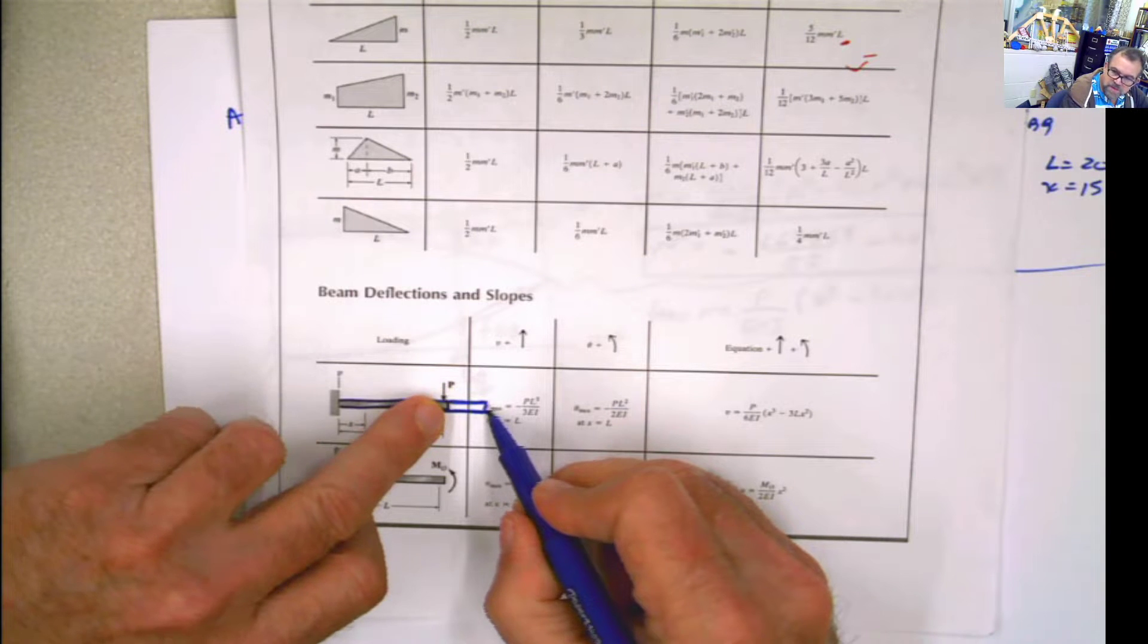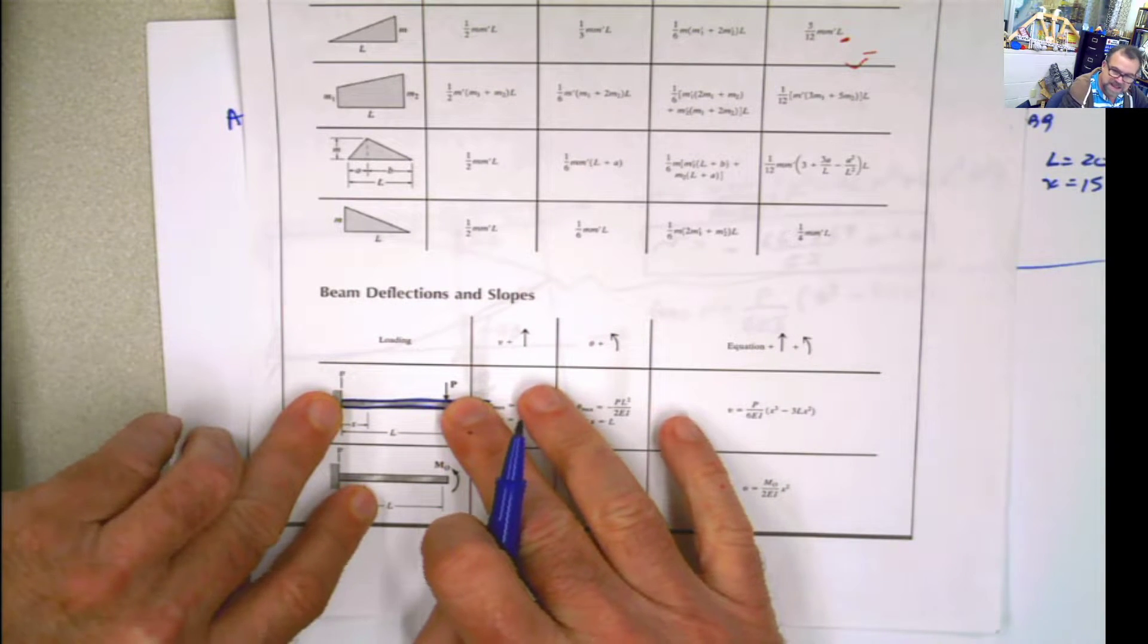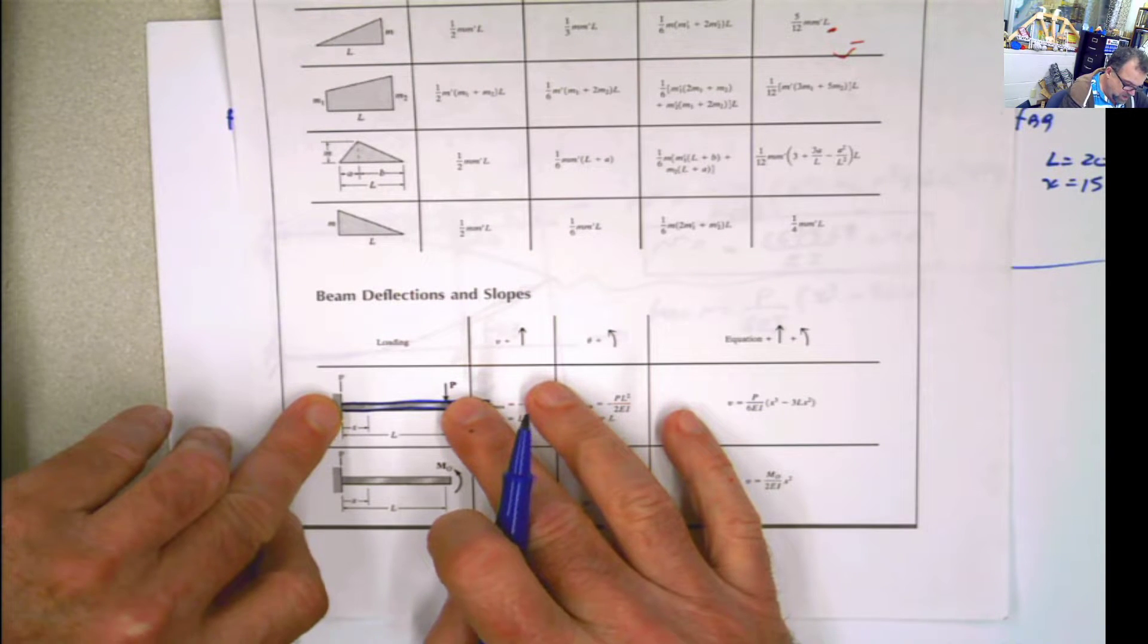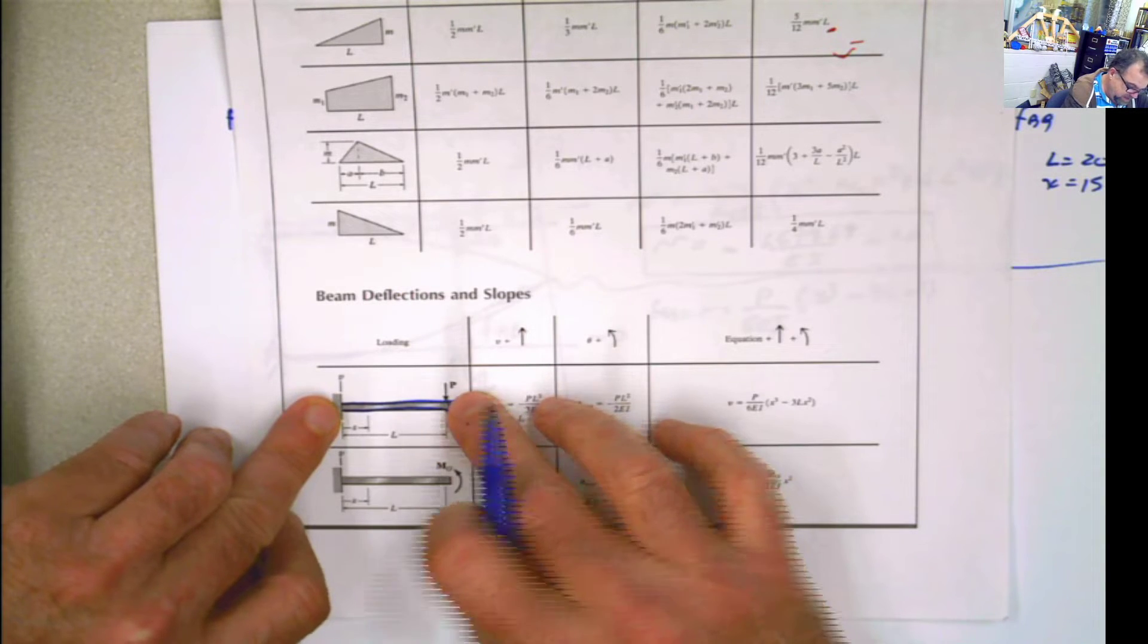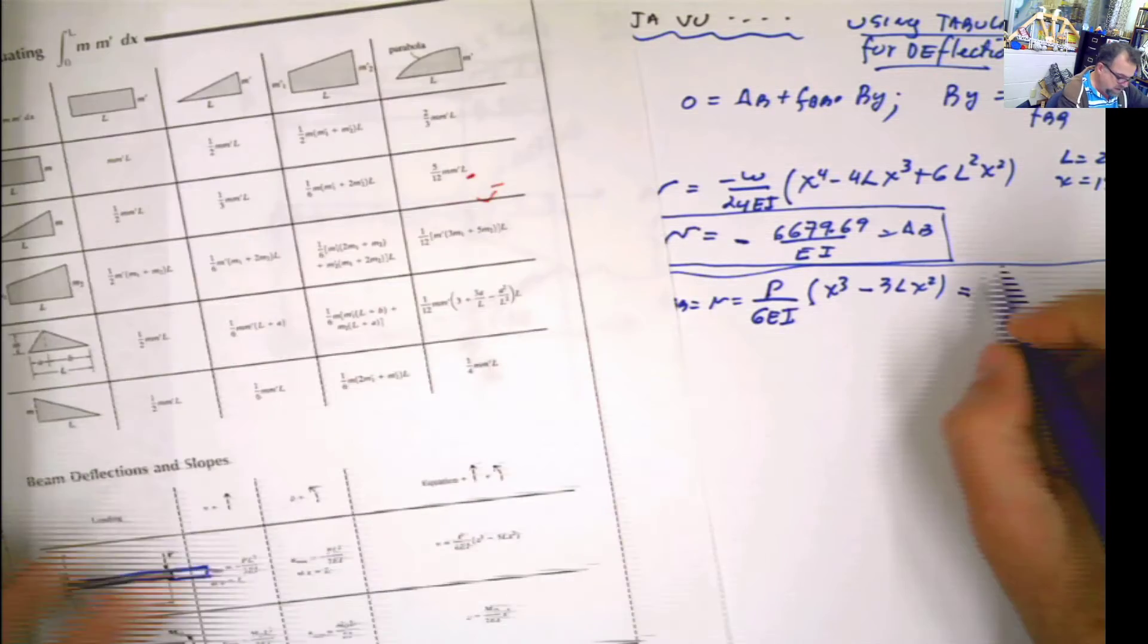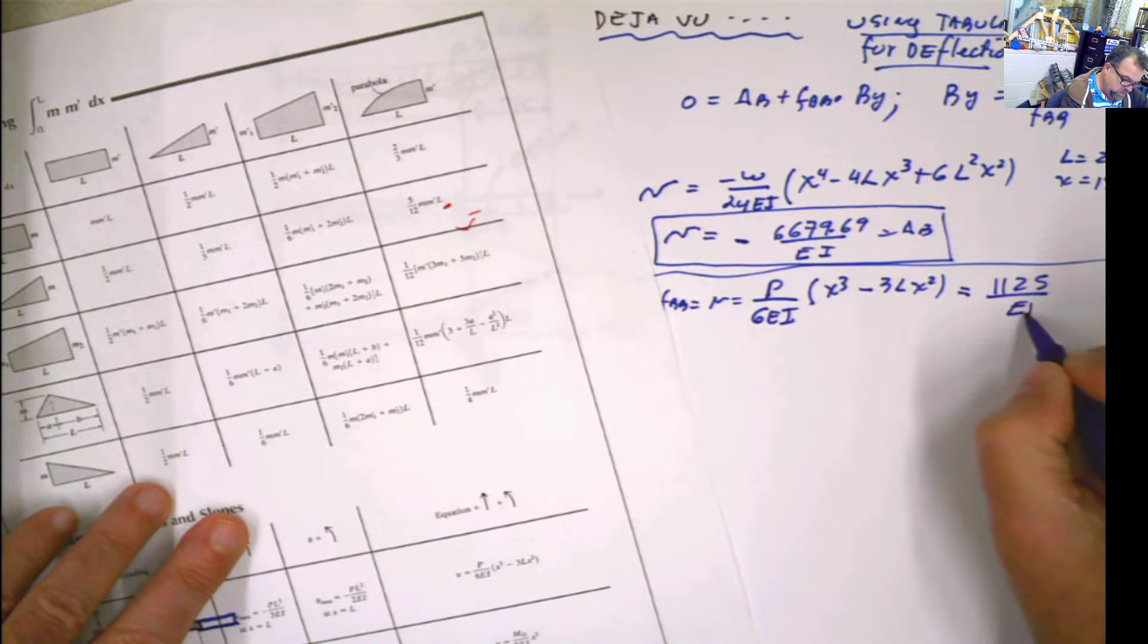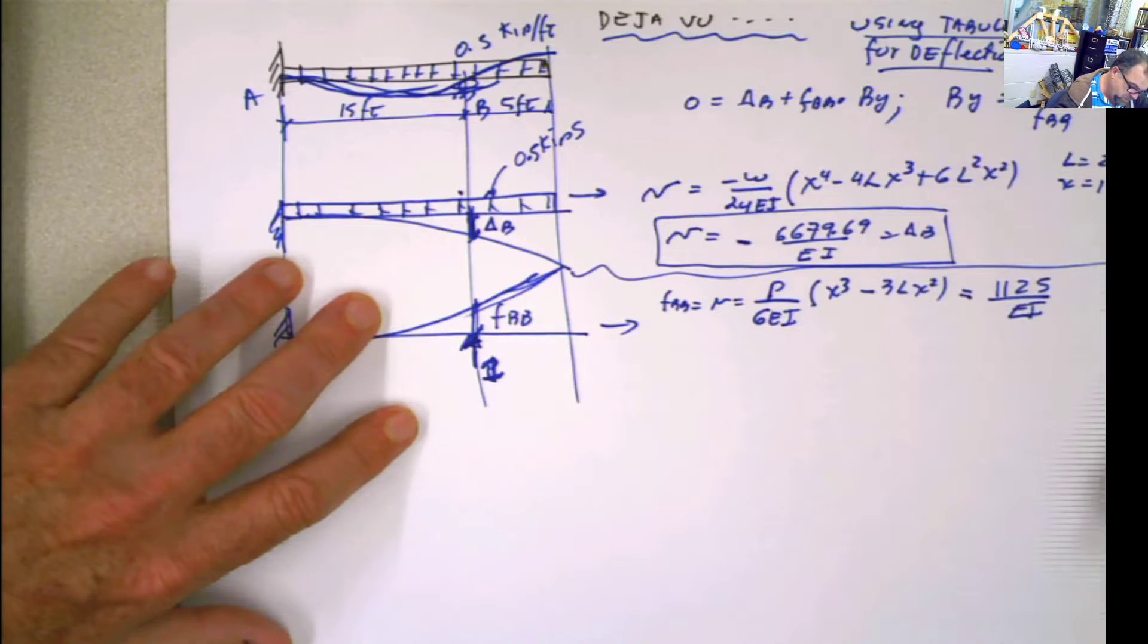x to the third minus 3L x squared. Important thing here. I could care less about this little part here, because I'm not calculating anything. I'm going to consider that my beam ends right there, where the load is applied. And that means that l is 15 and x is 15. If I use that, I'm going to get 1,125 divided by EI. Supposed to be negative, I remember. I'm pushing it up. In this case, I was pushing it down. So I keep it positive.